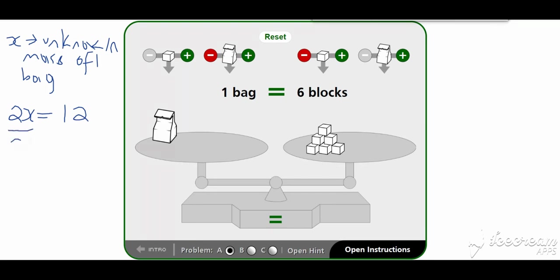Dividing this side by two and the right side by two to maintain balance: two into two is one, so we're left with x equals six. Bear in mind that x really means one x equals six, but because x indicates one of it we don't put the one in front. So x equals six.